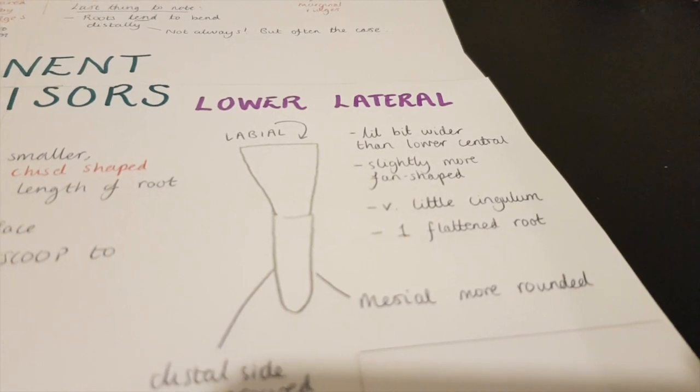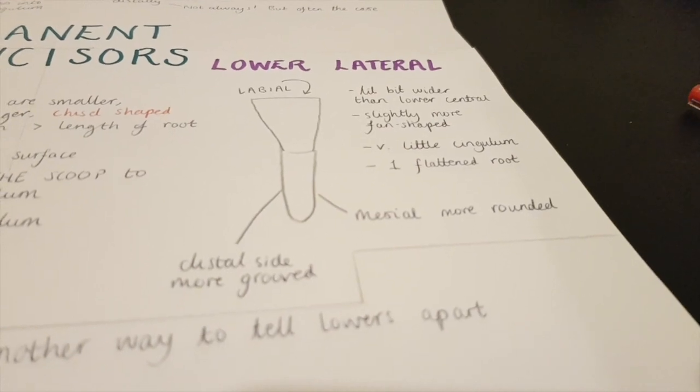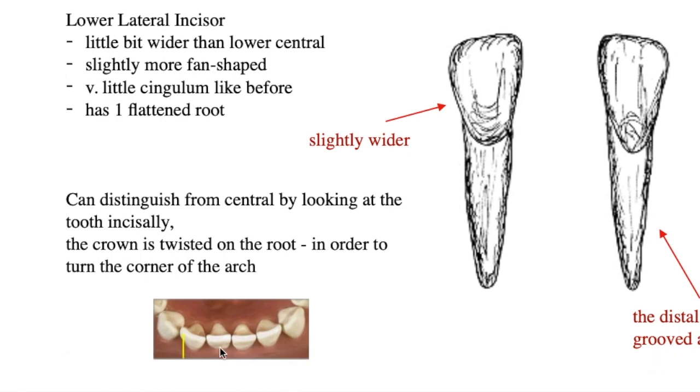Then on to the lower lateral incisor. It is still chisel-shaped but slightly wider than the central — more fan-shaped. Very little cingulum again, one flattened root. As already mentioned, the mesial side is more rounded and the distal side is more grooved. If that's not enough, there's another way to tell the lower incisors apart: by viewing the teeth incisally. The central incisors are pretty much straight, whereas the lower lateral's crown is twisted on the root — just so it can turn the corner of the arch. And that's my final observation of the permanent incisors.